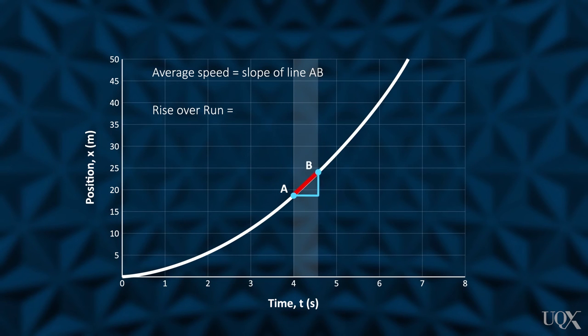As B is moved close to A, the slope of the line AB is approximately the same as the gradient of the tangent drawn at A. We will use the tangent to the curve at a particular time to tell us the instantaneous speed at that time.